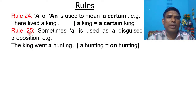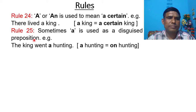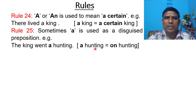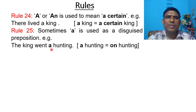Rule number 25: Sometimes A is used as a disguised preposition. For example, 'The king went a-hunting.' Here, 'a-hunting' means 'on hunting'. So, A is used as a disguised preposition.